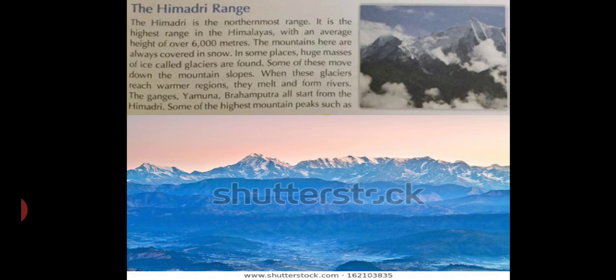Some of these glaciers move down through the mountain slopes. When these glaciers reach warmer regions, the snow starts melting and forms rivers.